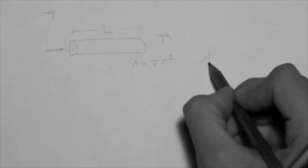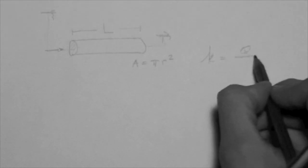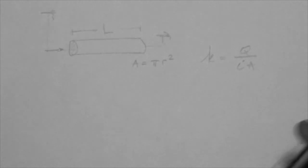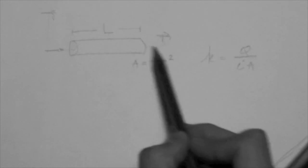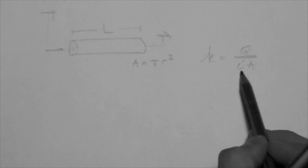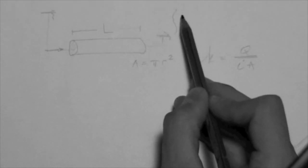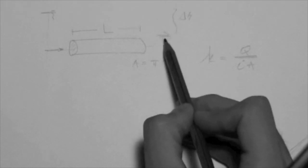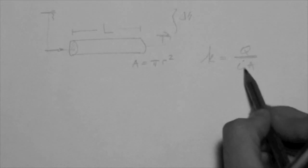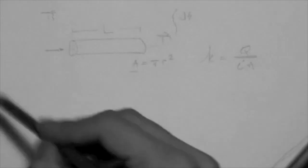We know that K is equal to Q, which is the measured flow rate through the system, divided by I, which is ΔH over L. ΔH is the distance between the two water reservoirs, and A is the area. So all this is just a review of what we have seen so far.